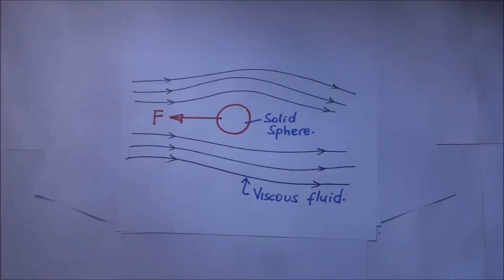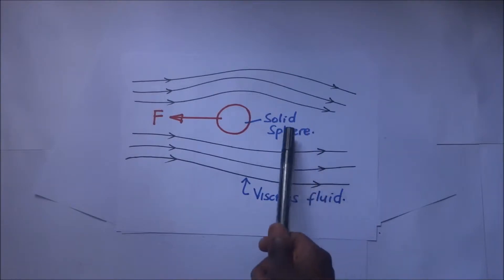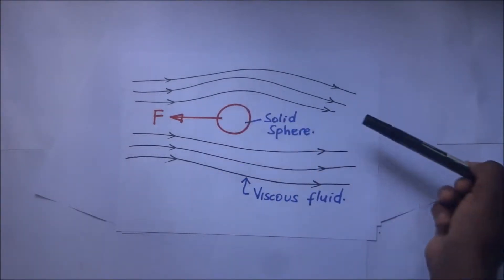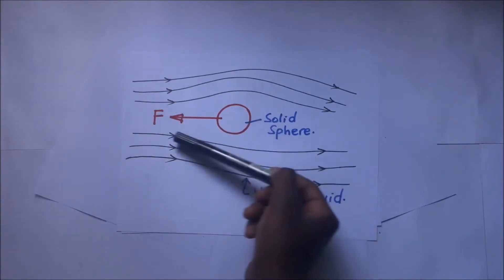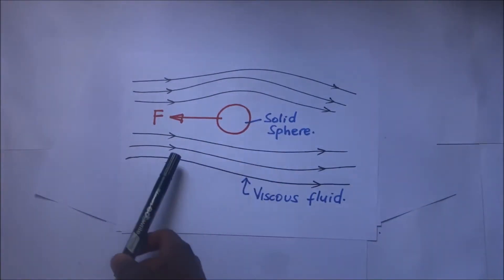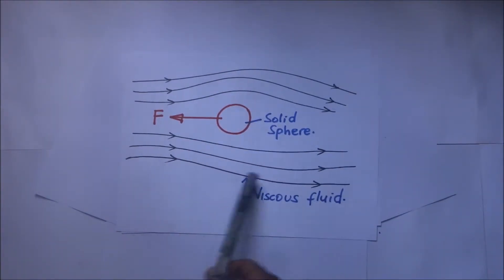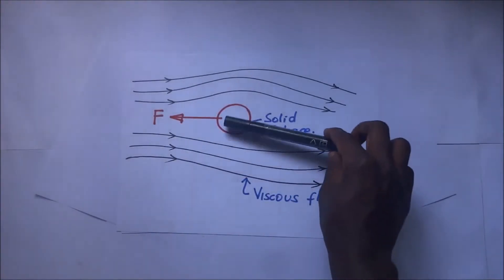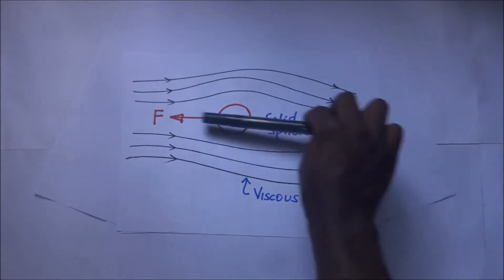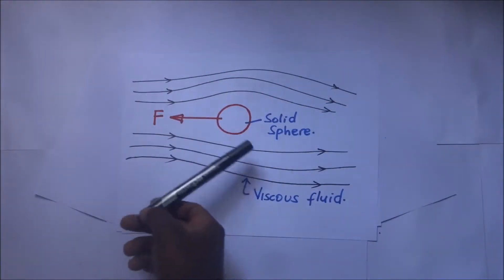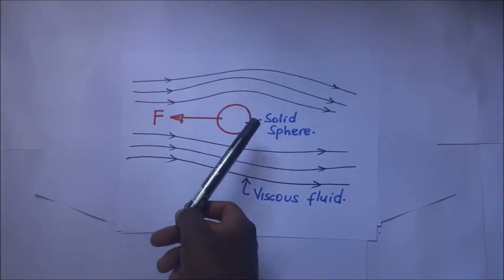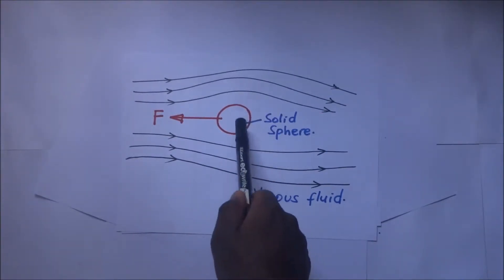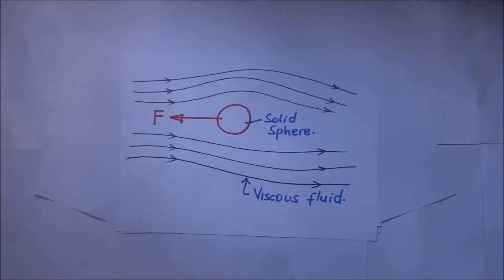We have another diagram that illustrates this better. We have a solid sphere moving in a direction with a certain force F, but there is a viscous fluid with layers acting in the opposite direction. As this force propels the solid sphere through this fluid, the solid sphere experiences what we call viscous drag.